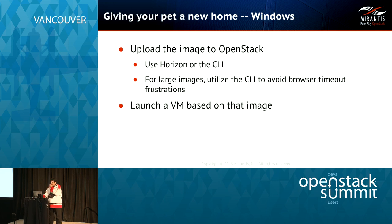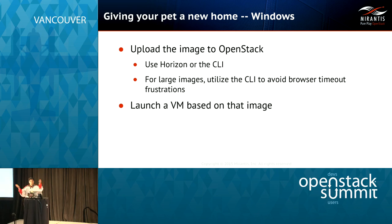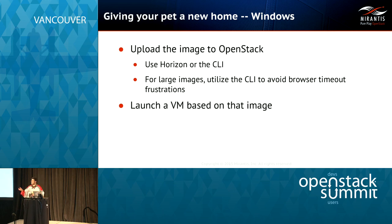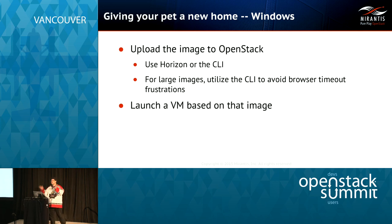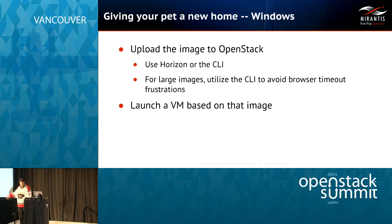Now you have a QCOW2 image that could have come from anywhere — it doesn't have to have come from Amazon. You're ready to bring this into OpenStack. You can do that one of two ways: if it's small, you can use Horizon. If it's large, just use the CLI, because otherwise the browser times out, the upload stops, and you pull your hair out. Then launch your VM based on that image. That's a lot of steps, but it's certainly better than trying to recreate everything you've done since 1998.